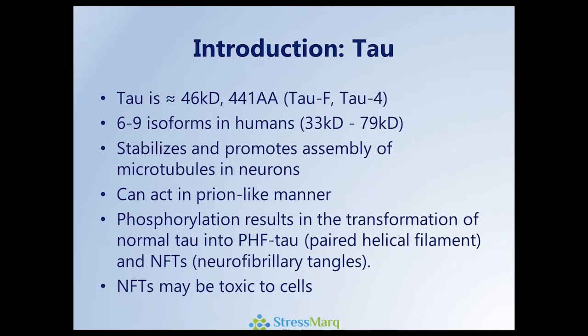Tau, from an introductory perspective, is also a small protein, about 46 kilodaltons in size, and has multiple isoforms in humans. It stabilizes and promotes the assembly of microtubules in neurons and is therefore responsible for the health of that neuron. It can also act in a prion-like manner, just like alpha-synuclein, but phosphorylation is key to its outcome.